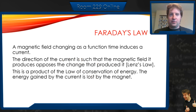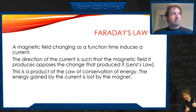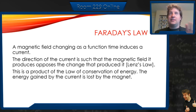Faraday's law is sort of a backwards version. It says that a magnetic field changing as a function of time induces a current. So if I change a magnetic field, move a magnetic field, take a magnet and move it around, I am actually generating a current at right angles. The direction of the current is such that the magnetic field it produces opposes the change that produced it. This is called Lenz's law, and it ends up actually being a conservation of energy problem. The energy gained by the current — because we're increasing the kinetic energy of the electrons generating a current — is the energy lost by the magnet. The new magnetic field that's produced fights the original one.